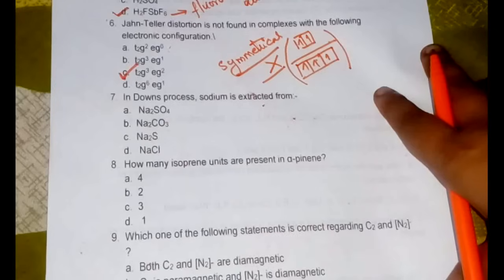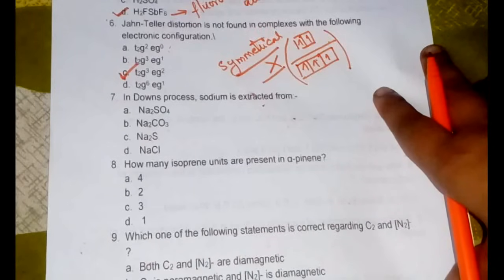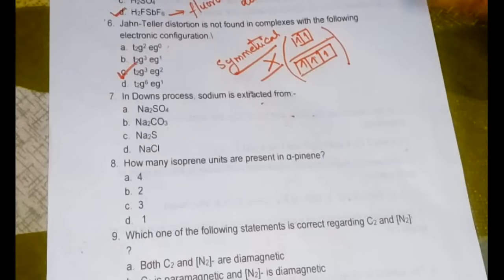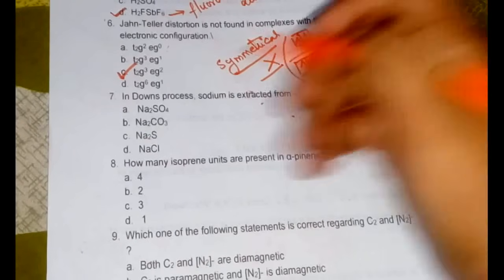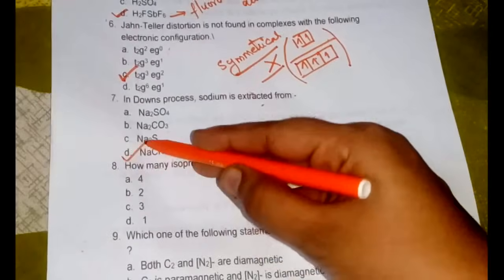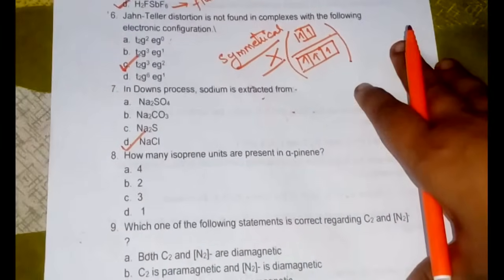The seventh question: in Down's process sodium is extracted from - so Down's process uses the particular cell known as Down cell for the extraction of sodium and this is done from NaCl, sodium is extracted from NaCl.